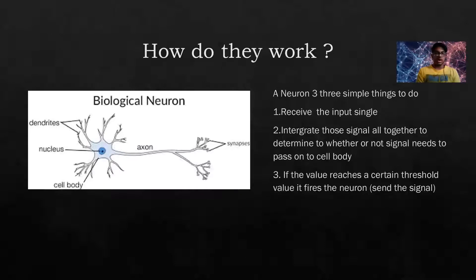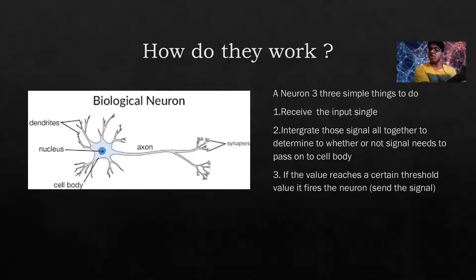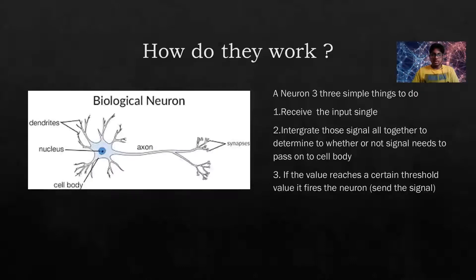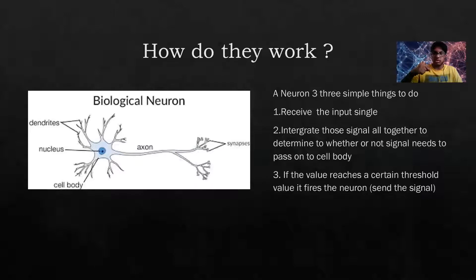Hello world, it's your boy Siddharth here and today we're going to talk about artificial neural networks. Before we understand how an artificial neural network works, we need to understand how biological neurons work. We've studied this in high school, so let's just revise. A biological neuron has three simple things to do.